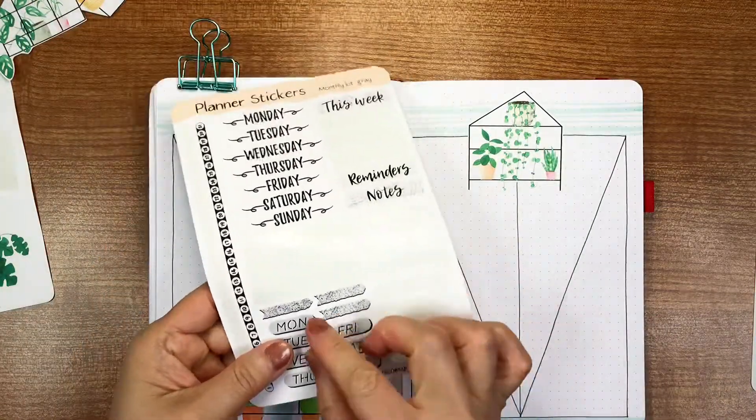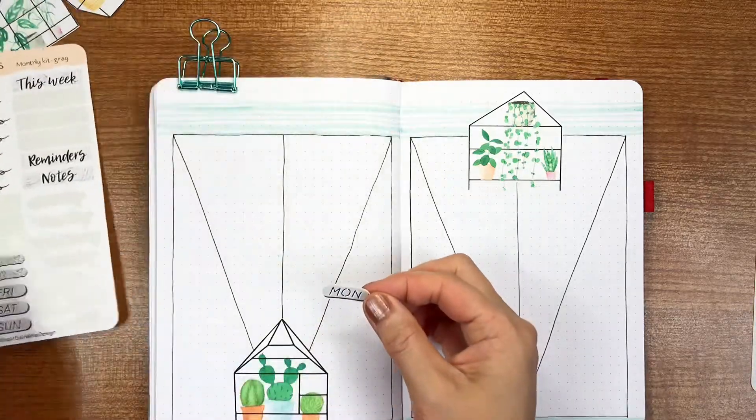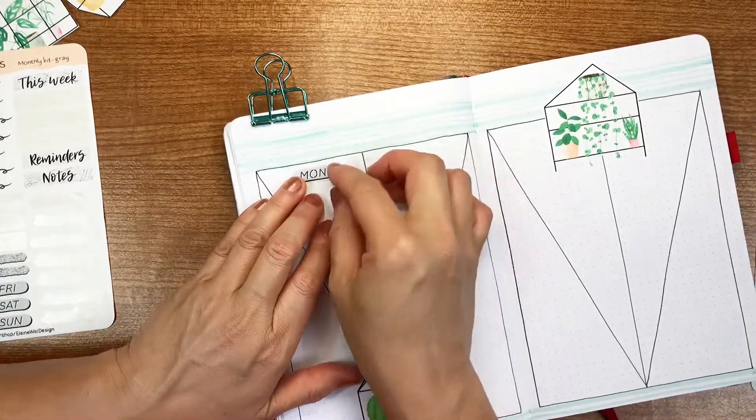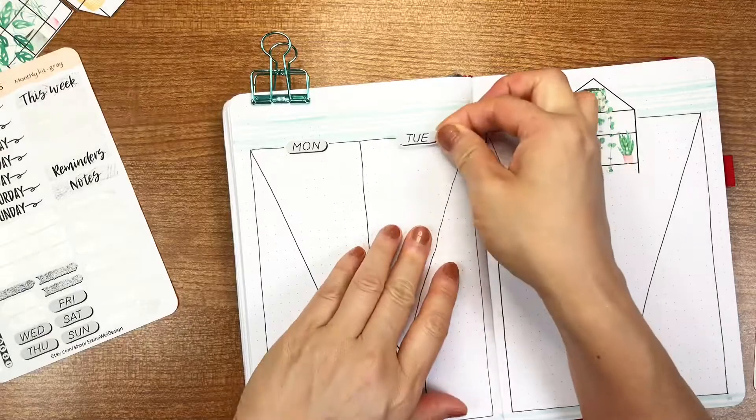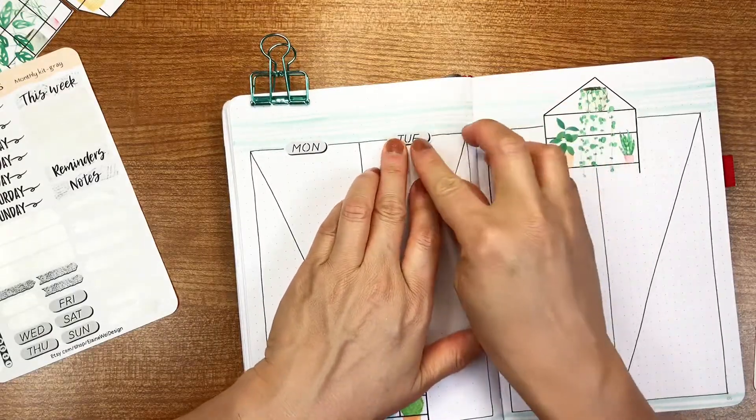Now I'm using my days of the week stickers from my gray planner sticker sheet to add weekday titles onto the pages.